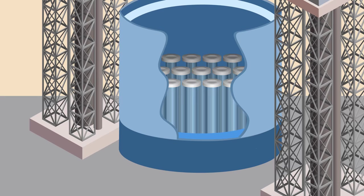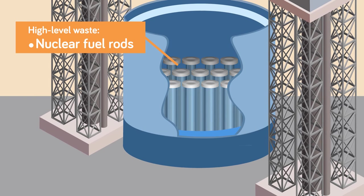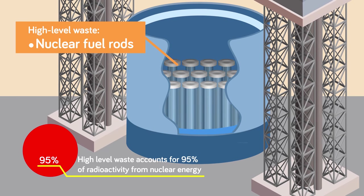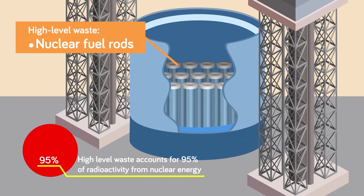When a nuclear fuel rod serves its purpose and is taken out of the core, it becomes high-level waste. While the number of high-level waste objects is small compared to the other classes, the level of radioactivity is so high that it accounts for over 95 percent of total radioactivity caused by nuclear energy.